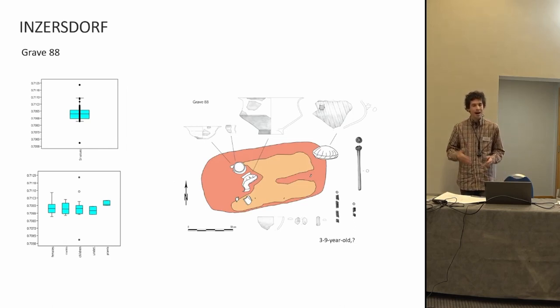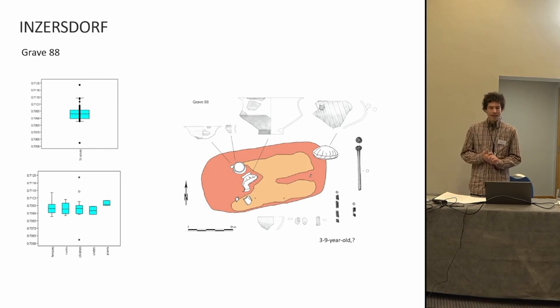The two outliers are amongst the earliest from the cemetery. Grave 88 is a single burial of a three to nine-year-old child, deposited in a body-sized grave pit with a few pieces of jewelry and pottery. This grave was heavily disturbed by modern plowing. This is one of the very earliest graves of Inzersdorf, which might indicate the founding phase of the cemetery by newcomers in this region.